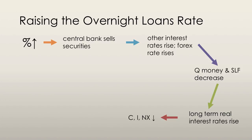Higher interest rates reduce consumption and investment expenditure, and the higher exchange rate reduces net exports as foreign buyers face relatively higher prices. The combination of reduced consumption, investment, and net exports reduces aggregate demand. When aggregate demand falls, so does real GDP, and either deflationary or reduced inflationary pressure can follow.